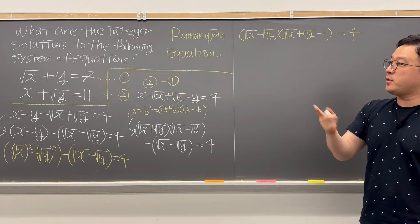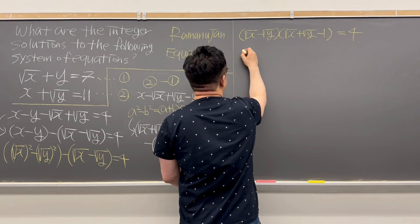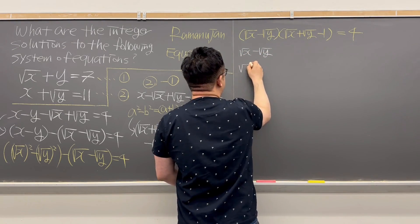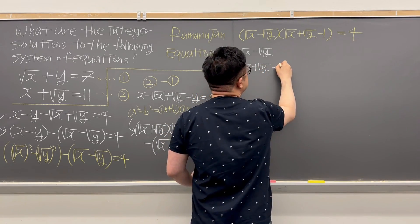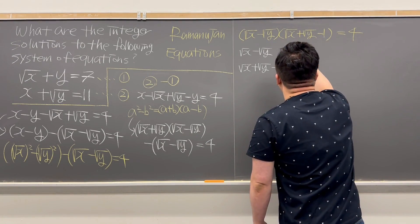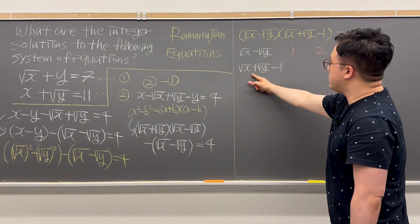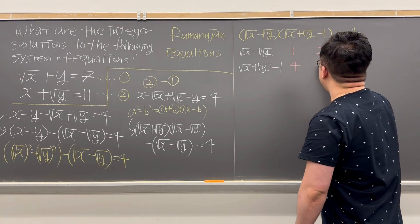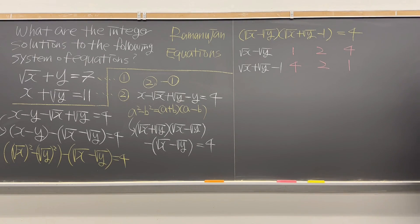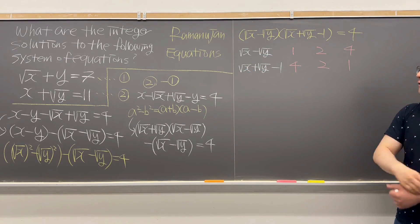Since the question is only asking for integer solutions, we can think about possible integers for these two factors. The first factor is (√x − √y) and the second is (√x + √y − 1). We can consider three cases: the first factor being 1, 2, or 4, and the second factor being 4, 2, or 1 respectively.